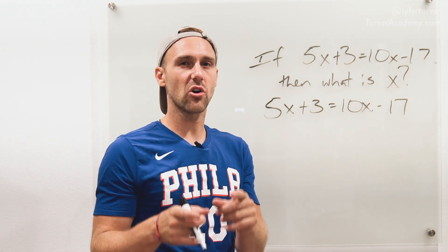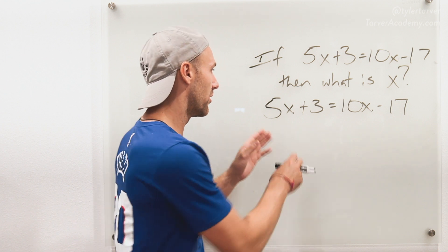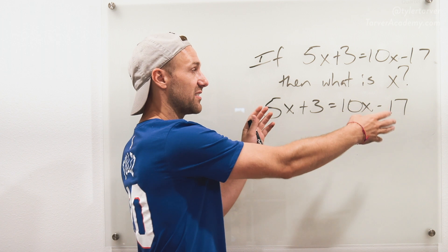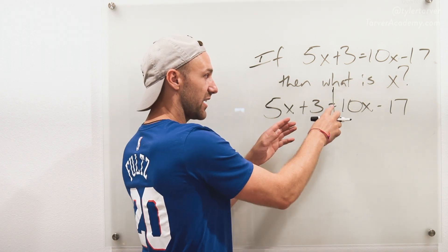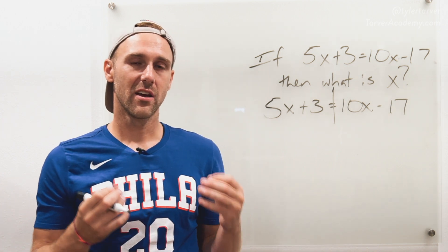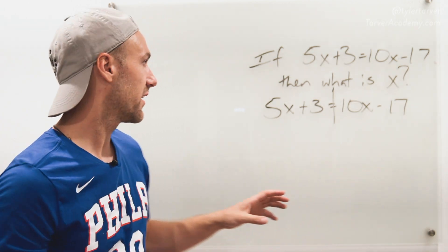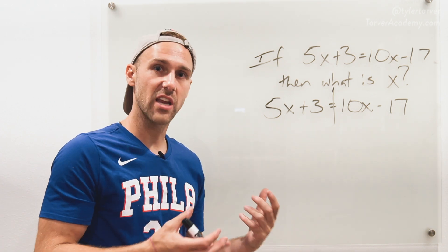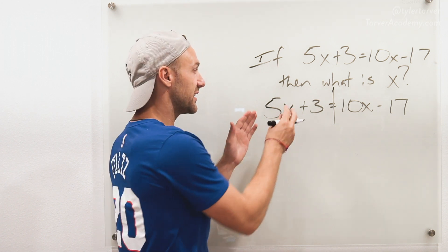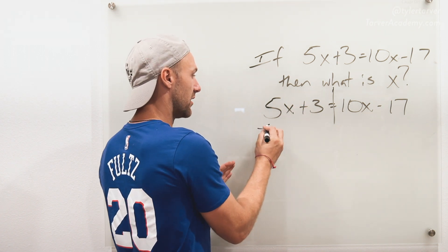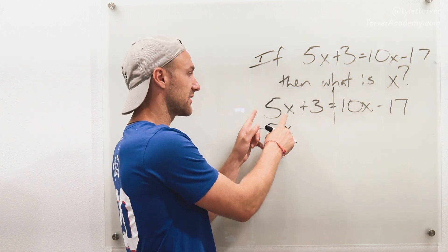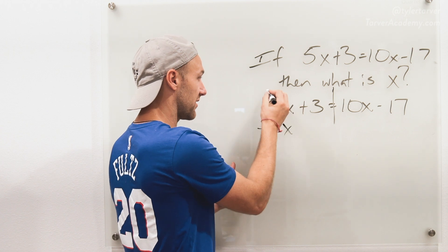I always like to start with the stuff that has the variable. What I want to do is get my x's on the same side of this equal sign. I always recommend getting the smaller one to the other side — it just makes it easier because you're not dealing with negatives. So I want to get my 5x over here. I need to subtract 5x, and the reason is to get rid of it — 5x minus 5x is 0, right? That would cancel it out.